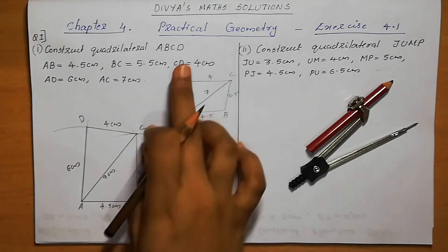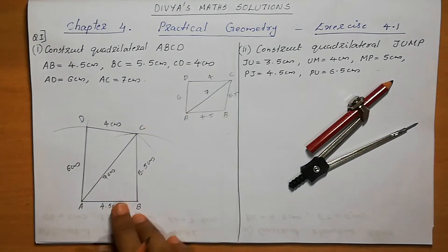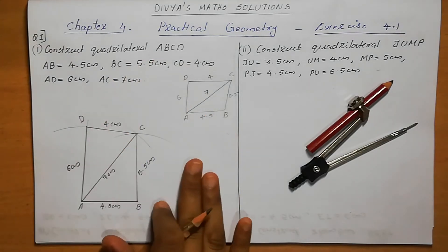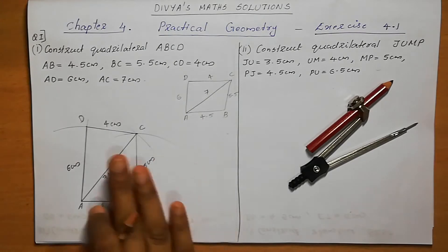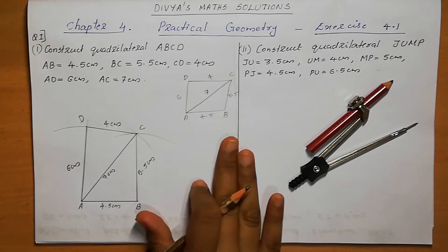So this is our quadrilateral ABCD, constructed using all the given measurements. We can write the steps also.